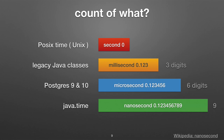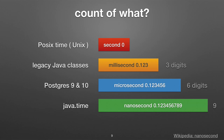For example, a DBA exports microseconds out of the database and then a programmer imports it using old legacy classes that only have three digits of fraction. She exports and does a comparison back to the database — they don't match. We have that actually happening all the time. And newer modern systems like the Java time library use nanoseconds. All of these granularities — milliseconds, microseconds, nanoseconds — are very common in different app environments.